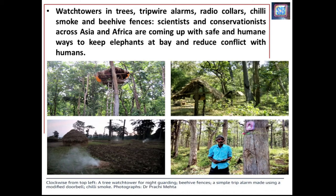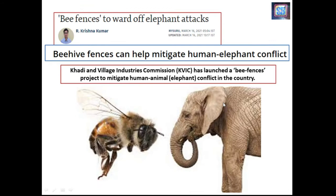Many methods have been adopted by scientists over the course of time, such as the use of watchtowers in trees, trip-wire alarms, radio collars, chili smoke, and bee-hive fences. These are different methods currently used by scientists and conservationists to avoid human-elephant conflict. However, elephants are quite intelligent and over time they get habituated to these deterrents. That is why we need to rotate these methods and look for other innovative approaches to create deterrence.